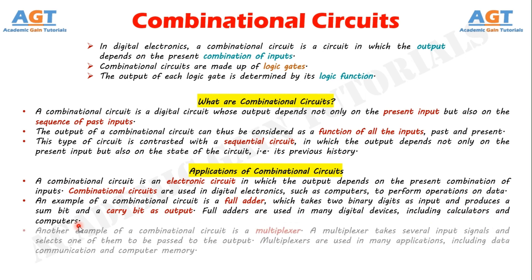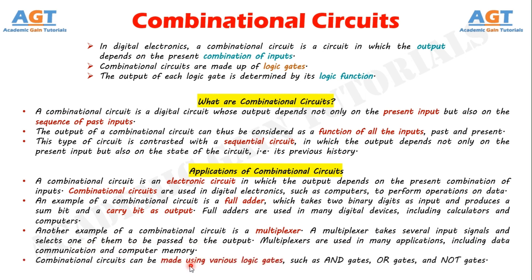Another example of a combinational circuit is a multiplexer. A multiplexer takes several input signals and selects one of them to be passed to the output. Multiplexers are used in many applications, including data communication and computer memory. Combinational circuits can be made using various logic gates, such as AND gates, OR gates, and NOT gates.